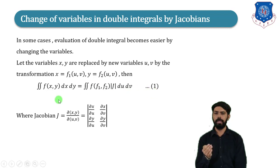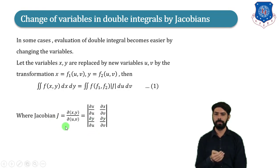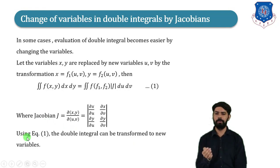The Jacobian J is defined as ∂(x, y)/∂(u, v), which equals the determinant with entries ∂x/∂u, ∂x/∂v, ∂y/∂u, and ∂y/∂v. This is how we find the Jacobian. Using equation 1, the double integral can be transformed to the new variables.